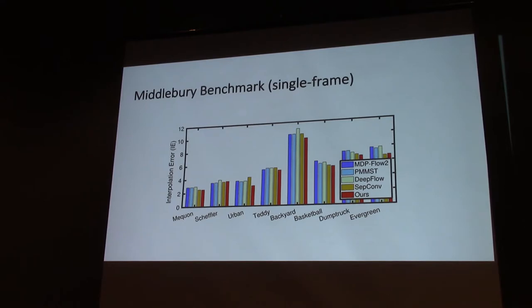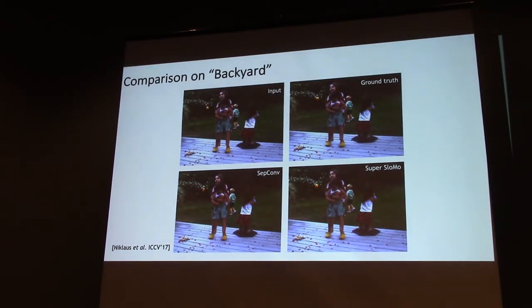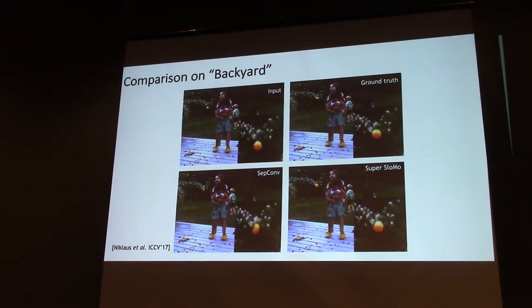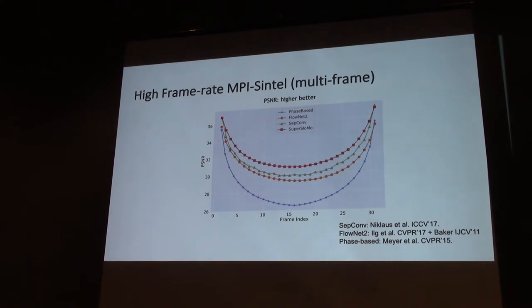We then evaluate Super Slow Mo on some standard benchmarks. The Middlebury benchmark is to evaluate single frame video interpolation. Back then we won six out of eight test sequences, which is good. Here are some visual comparisons. Given two input sequence frames, we can generate the middle intermediate frame, and we can see Super Slow Mo is able to capture the flying ball better. Here are some results on multi-frame interpolation. X axis is frame index - here we're talking about 31 intermediate frames. Y axis is the difference between prediction and ground truth - we're looking at PSNR, so the higher the better. We can see Super Slow Mo, the red curve, is almost consistently better than other approaches at each single step.